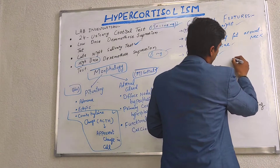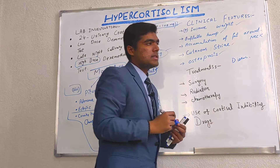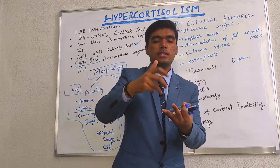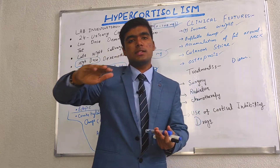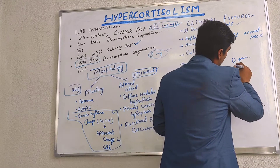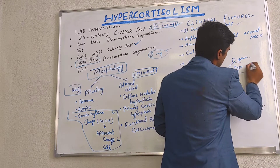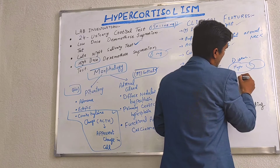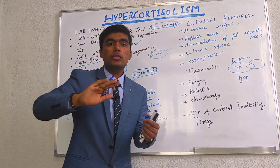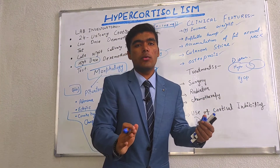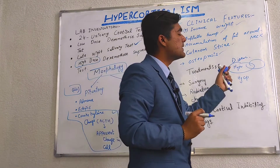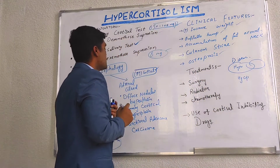Regarding the difference between Cushing disease and Cushing syndrome: Cushing syndrome involves the complete pathway — hypothalamus, pituitary gland, and adrenal gland all involved. Cushing disease means either the hypothalamus, pituitary, or adrenal cortex has a defect — not the complete process, only a specific part is affected. This is why we call it a pituitary disease or Cushing disease.